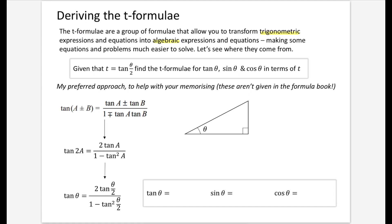A couple of things to point out with T formulae questions: they'll say something like 'given that T equals tan of theta over 2'. It's always tan. The angles are always double the size — that's not a typo. It doesn't have to be theta over 2 and theta; it could be theta and 2 theta, or 2x and 4x. But as long as there's that relationship with the angle doubling, you'll be able to use these formulae. The setup is always that T equals the tan of an angle.